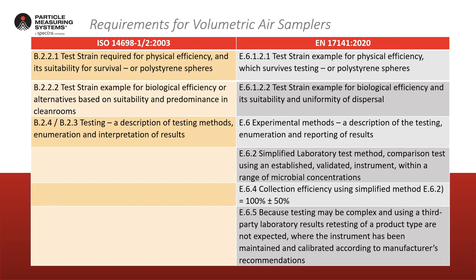Comparing ISO 14698 versus EN 17141, the test strain requirements and test methods are defined for both standards. Section E6-2 of EN 17141 talks about a simplified laboratory test method — comparison against an established validated instrument. If no provided information exists with your sampler for EN 17141, you can run a relatively rudimentary test. Section E6-4 specifies 100 percent plus or minus 50 percent, so providing results are within that acceptable range, the test performed in an open environment is considered a better reflection of day-to-day sampling conditions.